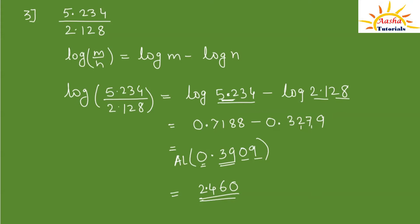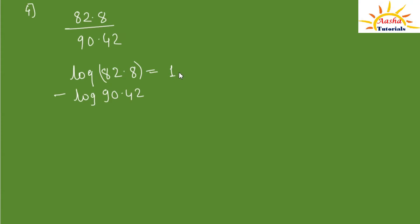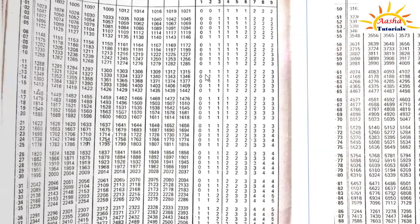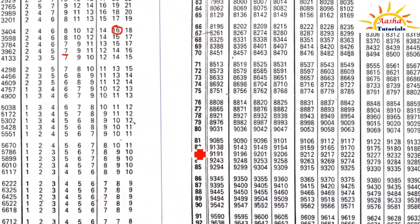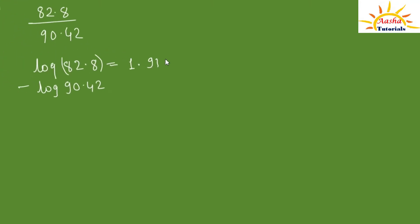Let's take one more example: divide 82.8 by 90.42 using the log table. Finding log of 82.8: it is a 2-digit number, so the characteristic value is 1. Log of 82 in the 8th column is 9180, so log of 82.8 is 1.9180.